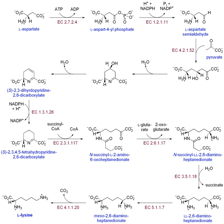Topoisomerases at the replication fork remove supercoils caused by DNA unwinding, and single-stranded DNA binding proteins maintain the two single-stranded DNA templates stabilized prior to replication. DNA synthesis is initiated by the RNA polymerase primase, which makes an RNA primer with a free 3'-OH. This primer is attached to the single-stranded DNA template, and DNA polymerase elongates the chain by incorporating nucleotides. DNA polymerase also proofreads the newly synthesized DNA strand. During the polymerization reaction, a nucleophilic attack occurs by the 3'-OH of the growing chain on the innermost phosphorus atom of a deoxynucleoside triphosphate.